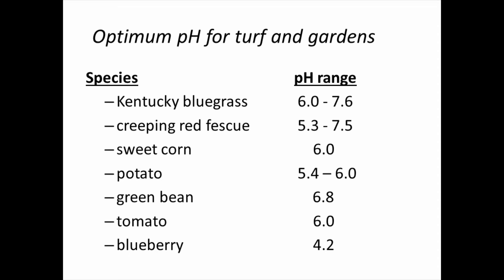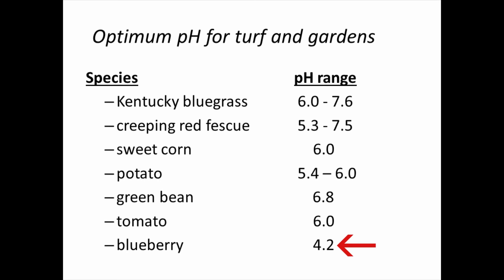For specific pH optima: Kentucky bluegrass and creeping red fescue are relatively tolerant of wide pH ranges — outstanding Kentucky bluegrass has been grown at pH 8.2 or 8.4. Creeping red fescue is more tolerant of acidic conditions. Sweet corn has an optimum pH around 6. Potato prefers slightly more acidic soils. Blueberry is famous for preferring highly acidic soils with a pH of 4.2. Understanding the pH preference for your crop is really important.